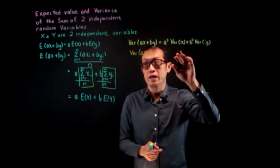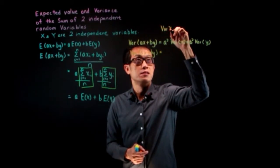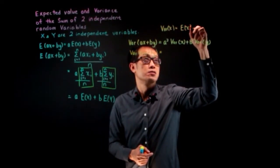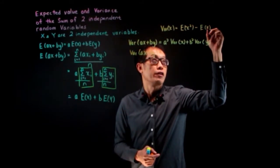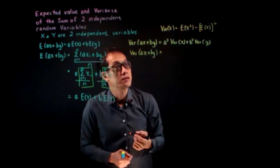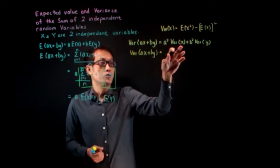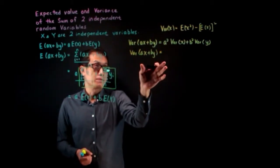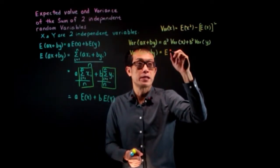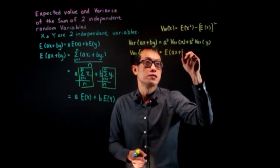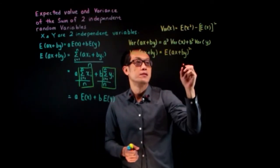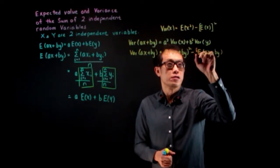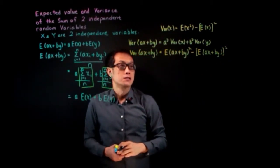The variance of X can be rewritten as expected value of X squared minus the expected value of X, whole thing squared. We will make use of this formula to prove the second result. First, we rewrite variance of aX plus bY in this form, so that would be equals to expected value of aX plus bY squared, minus expected value of aX plus bY, then you have to square this term.